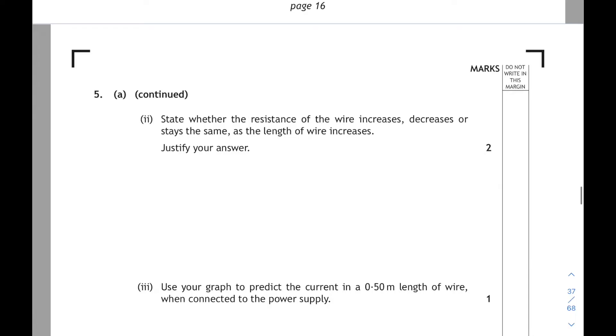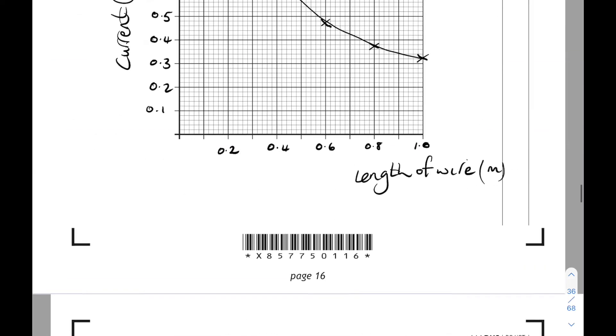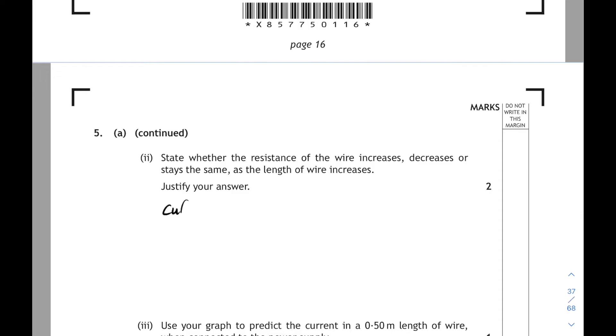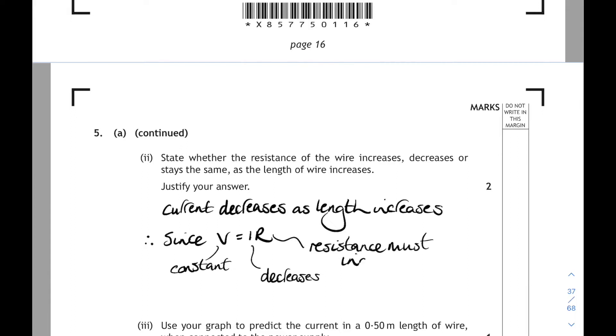5A part 2. State whether the resistance of the wire increases, decreases, or stays the same as the length of the wire increases. Well, our graph shows us that as the length of the wire increases, the current is decreasing. And if the current decreases, since V equals I times R, and V is constant, when the current goes down, the resistance must have increased as the length increases.